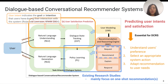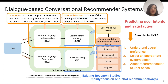User intent refers to the user's goal when they interact with the system, so that the system could incrementally refine its understanding of users' preferences and improve recommendations to serve users' needs. In addition, it is also important to predict the user's satisfaction with the recommendation. Satisfaction indicates whether the user's goal is fulfilled or not, and this can help the system select the appropriate action to carry out. But so far, few studies have investigated these issues in dialogue-based conversational recommendations.